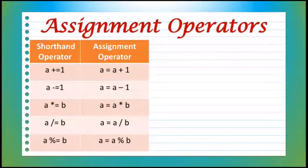Next, the shorthand operator A *= B is similar to A = A * B. In both statements, A is multiplied by B and the result is stored in A.